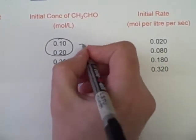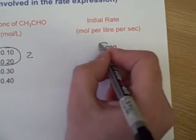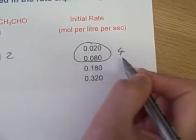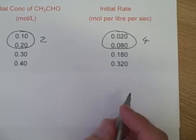The concentration has been altered by a factor of two and the rate though is altered by a factor of four. So what we're dealing with in this case is a second order reaction.